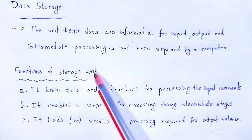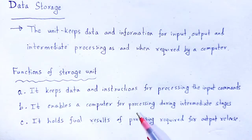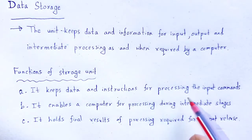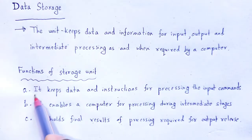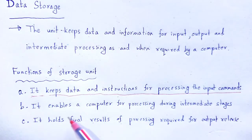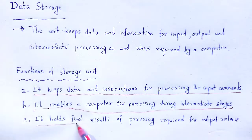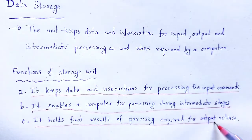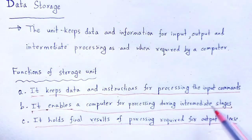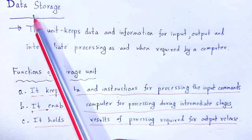The functions of the data storage unit: it keeps the data and instructions for processing the input commands. It enables the computer for processing during intermediate stages. It holds final results of processing required for output release — first input, then processing, then output. The data required for all these functions of a basic computer is stored within the data storage unit.